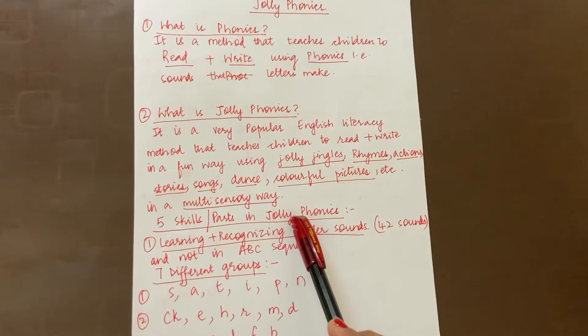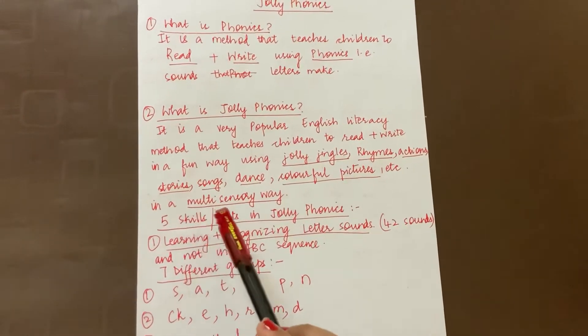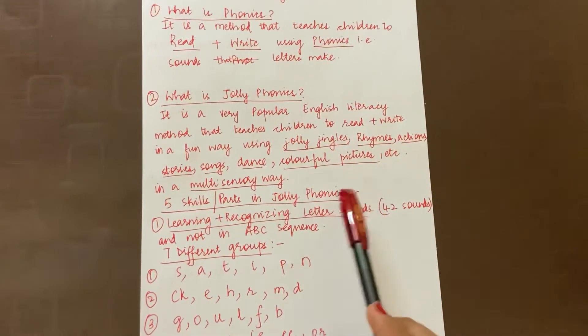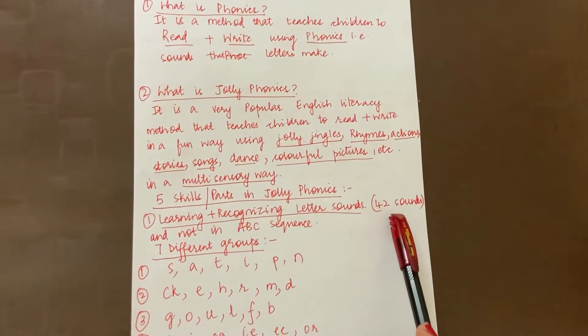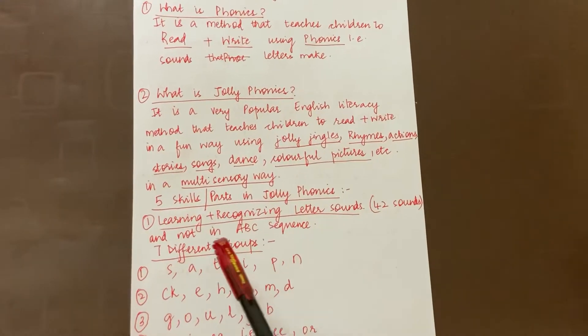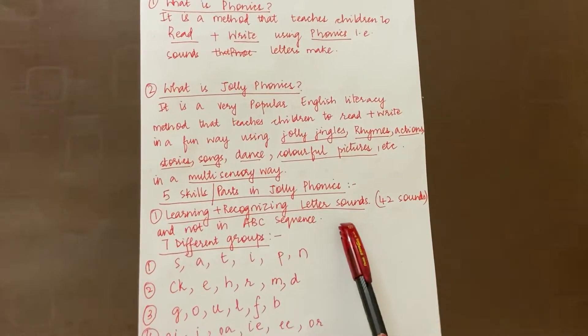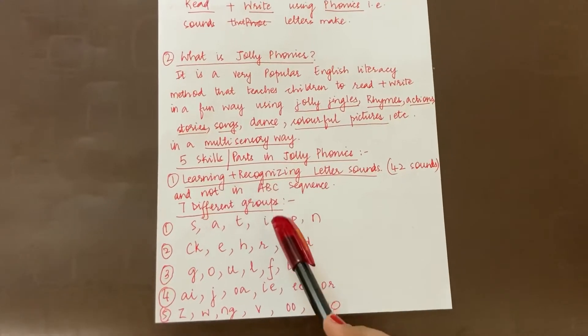So what does Jolly Phonics consist? How do they teach Jolly Phonics? So they have 5 skills or 5 parts in Jolly Phonics. First is the learning and recognizing letter sounds. So there are 42 letter sounds and they are taught not in the ABC sequence but in the sequence of these 7 different groups.